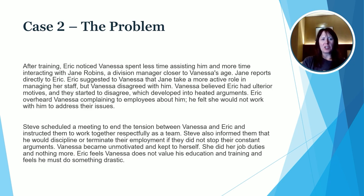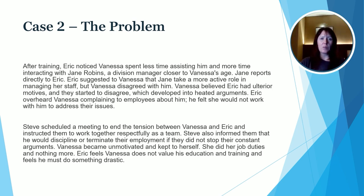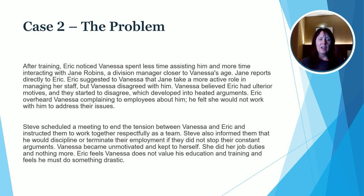After the background information, we learn that there have been some challenges between Vanessa and Eric, some of which revolve around Jane, who is friends with Vanessa but actually reports to Eric. Vanessa believes Eric has ulterior motives, and when they disagree, they end up arguing instead of discussing issues calmly. Eric also overheard Vanessa complaining to employees about him. As the problem escalated, Steve scheduled a meeting to address the tension and asked them to work together respectfully as a team.